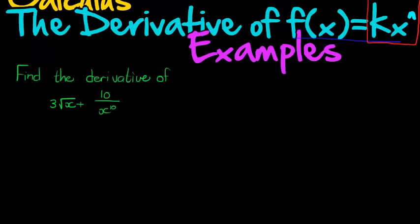So one way in which we can do it is to say d, and in these square brackets, 3 square root x plus 10 over x to the power of 10.